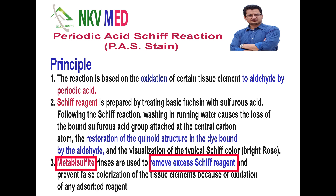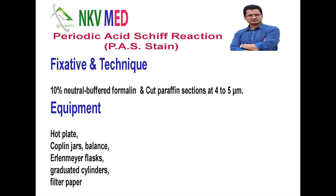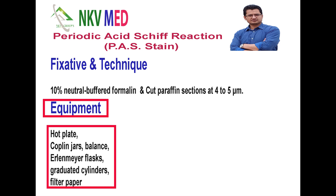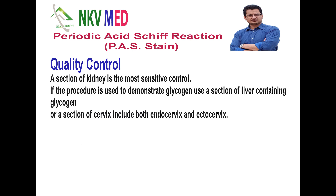For fixation, 10% neutral buffered formalin is required. In technique, four to five micrometer thickness paraffin sections are needed. These are the equipment needed for normal PAS staining. For quality control, we need one section from either kidney, liver, or cervix. A liver section is required if we are going to do staining for the demonstration of glycogen.